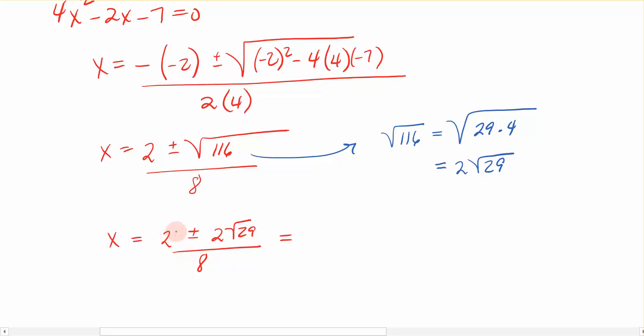This I can simplify. It's a little bit easier to see when it's written in its separate fraction form. So I'm going to separate this as 2 eighths plus or minus 2 square roots of 29 over 8. I can take a single fraction and write it as 2 fractions, because how do you add and subtract fractions? You add or subtract numerators, and you keep the denominators the same.